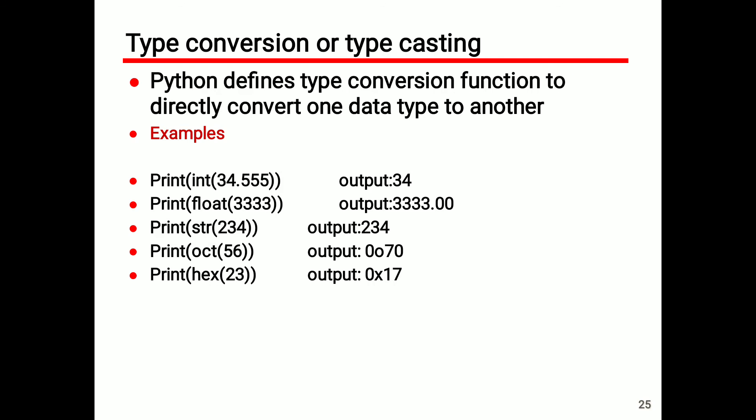Python type conversion or typecasting: Python defines type conversion functions to directly convert one data type to another. For example, int(34.555) outputs 34, because we convert the floating-point number to an integer value, ignoring the decimal part (0.555).